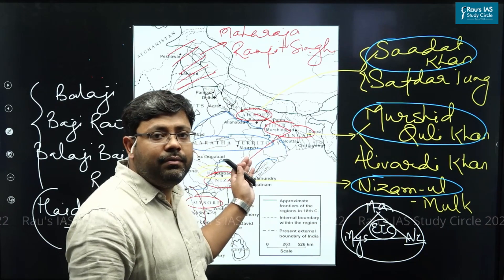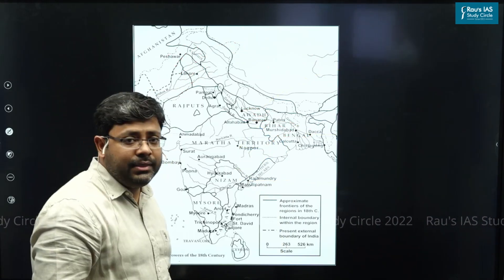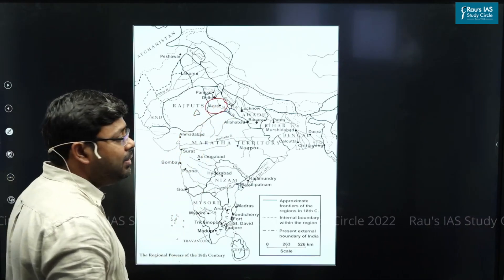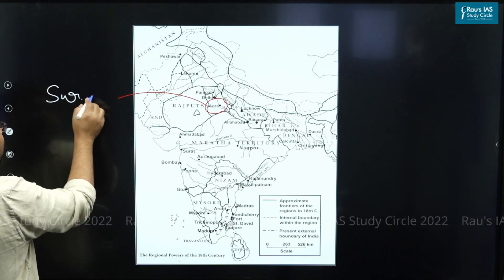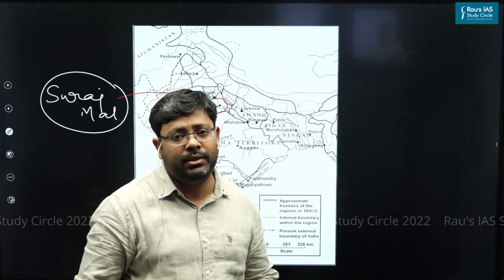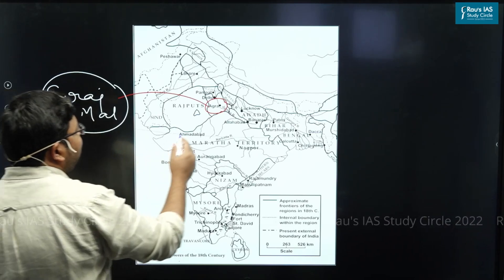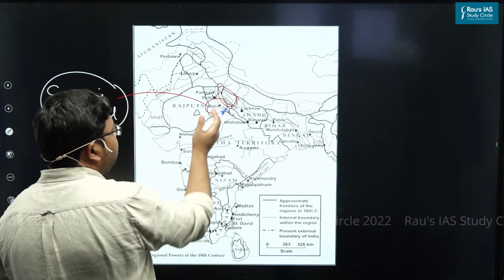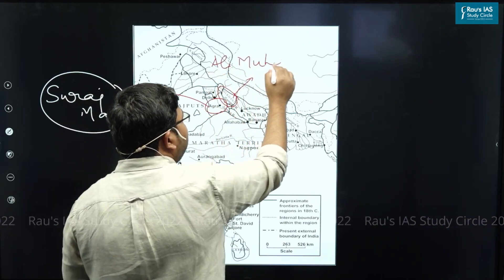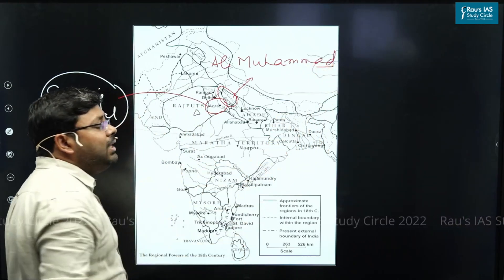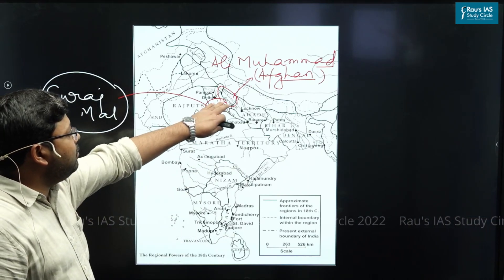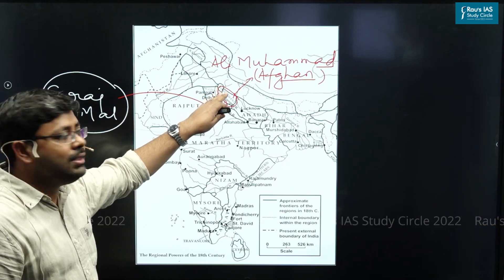Apart from these major regional powers, there were some smaller ones as well. In the areas around Agra, Mathura, Meerut, and Aligarh, there was a small but very powerful Jat Kingdom that reached the apex of its glory under Raja Suraj Mal, who was so wise that he is also considered the Plato of the Jats. Another regional power was the Rohilkhand Kingdom, just above Awadh, established by Ali Muhammad. Ali Muhammad was Afghan, which is why the Rohilkhand Kingdom is also considered an Afghan kingdom.